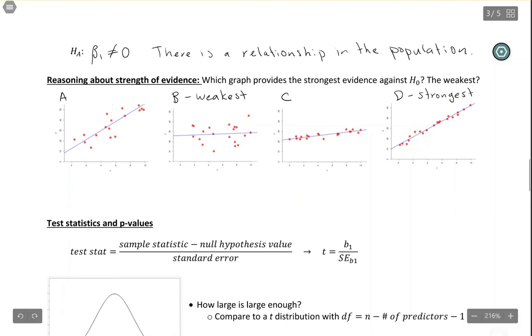This intuition goes into our test statistic. Think about D and what made this strong evidence: you had a large slope—notice that's the numerator of your test statistic. You also have very little noise around the line; your points fall close to the line. The variability around the line is measured by the standard error. As usual, standard error also takes into account sample size. With a large slope and very little noise, you get a large t-statistic.